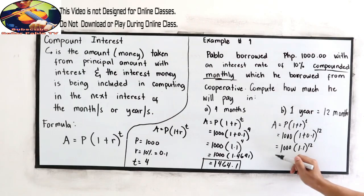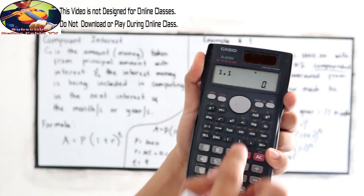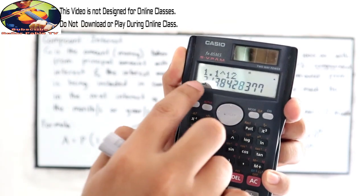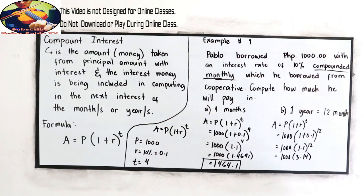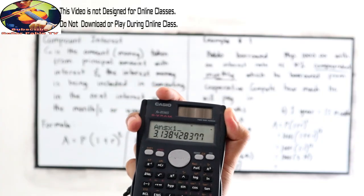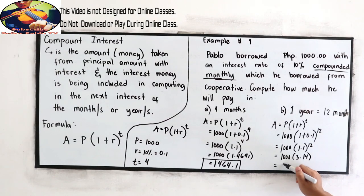So 1,000 times 1.1, raised to 12. 1.1 raised to 12 is 3.14. Just multiply it to 1,000. The amount of money after 1 year will become 3,138.43.